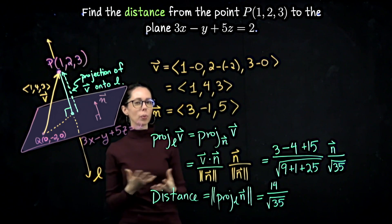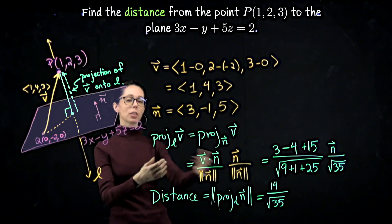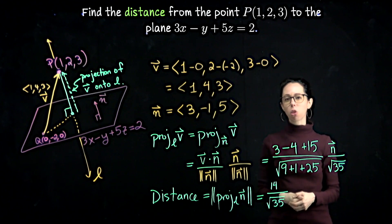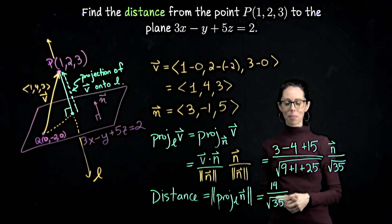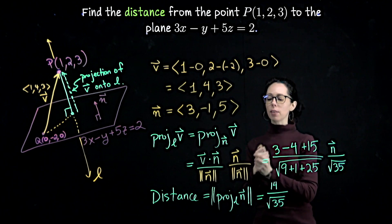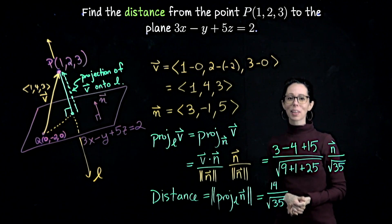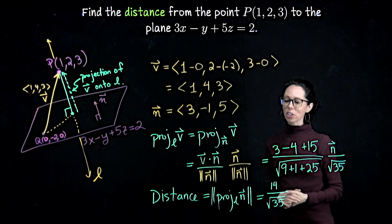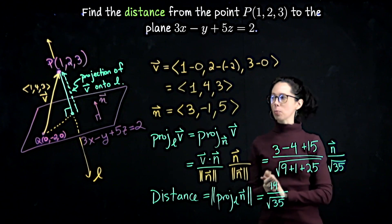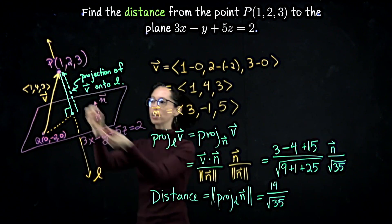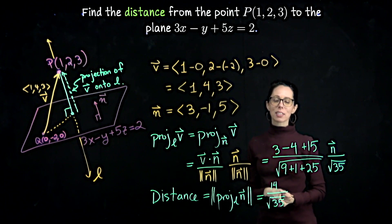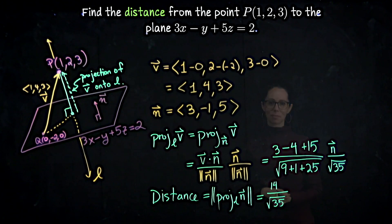So the only formula, if you will, that we needed to have memorized was the vector projection. This component that we identified at the end, by the way, is sometimes called a scalar projection. It's how long the vector projection is. You don't have to memorize the scalar projection on its own, though, if you feel comfortable reproducing the step that I did here. And again, going back to the first version of this computation that I wrote down, you could also just find the vector projection. So finish out this computation, finding this vector, and then use the magnitude of that vector in order to say what the distance from the point to the plane is.